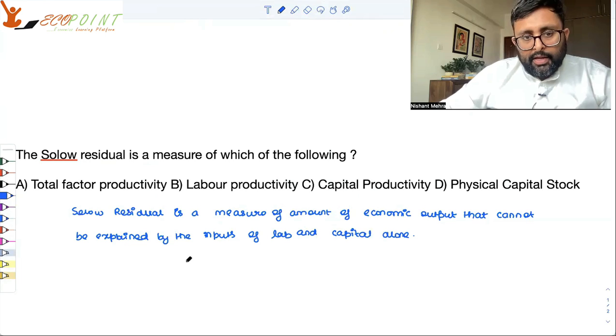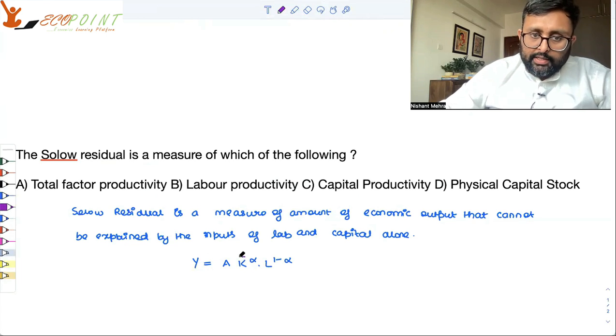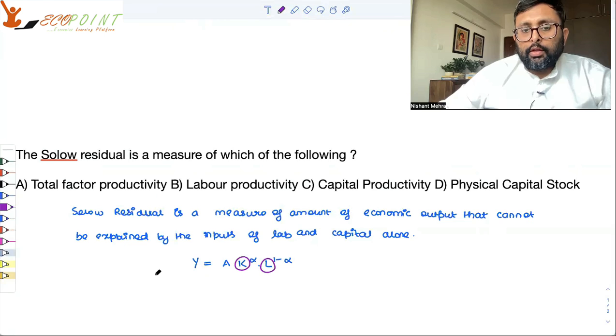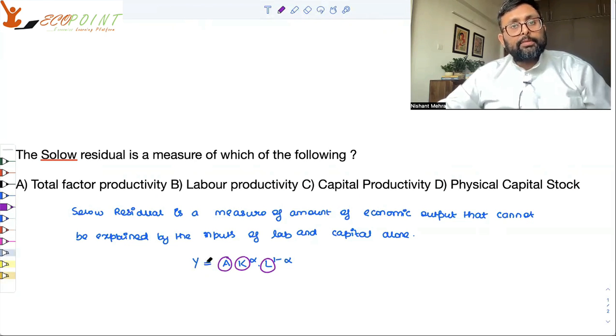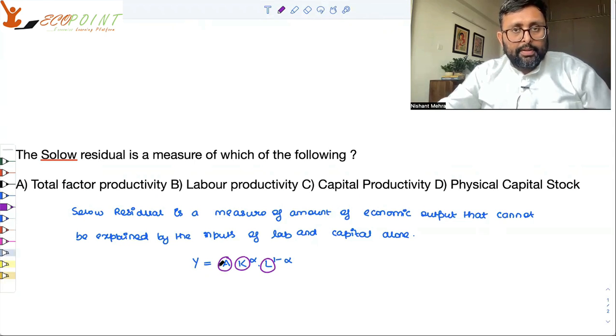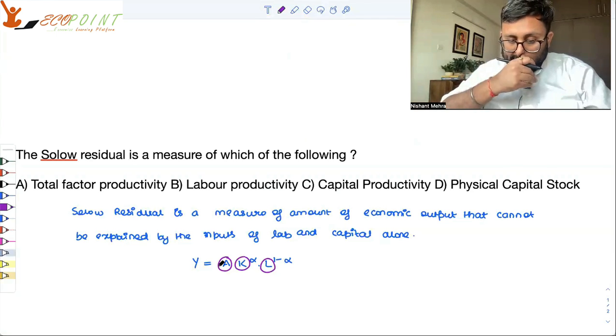Maybe you have your production function like this, Y = AK^α L^(1-α). So, your output can grow because capital is growing. Your output can grow because labor is growing. But your output can also grow because productivity is growing. So, some increase in output, that increase in output which cannot be explained by the growth of inputs alone. Historically, your inputs might grow, but something apart from inputs can also change. For example, the productivity can also increase. So, if you become more productive, then a same person can do the job of three people. Inputs have grown, but you yourself has become very productive. So, that is what Solow residual is.